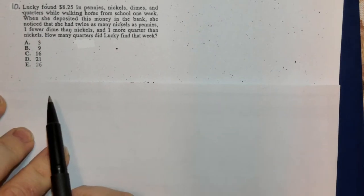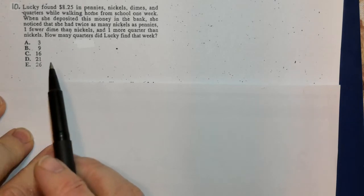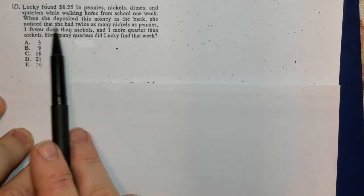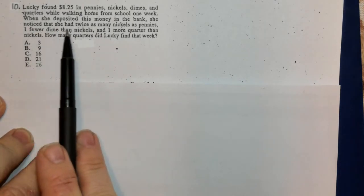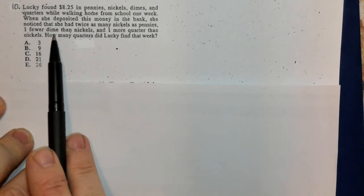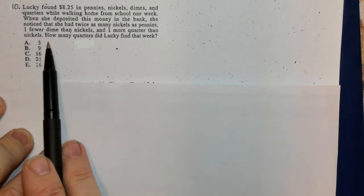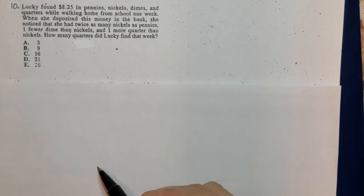Lucky found $8.25 in pennies, nickels, dimes, and quarters walking home from school one day. When she deposited the money in the bank, she noticed that she had twice as many nickels as pennies, one fewer dime than nickels, and one more quarter than nickels. How many quarters did Lucky find that week?